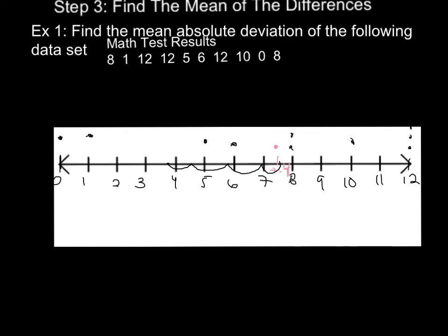Because my mean absolute deviation, remember that distance could mean either direction. So here I would go 1.5, 1, 2, 3.